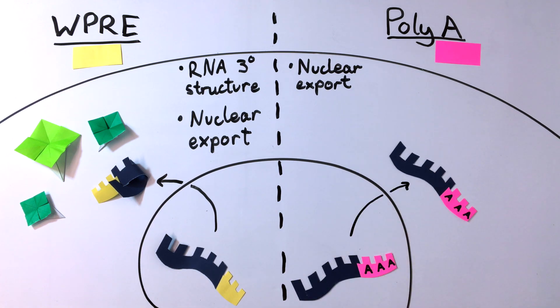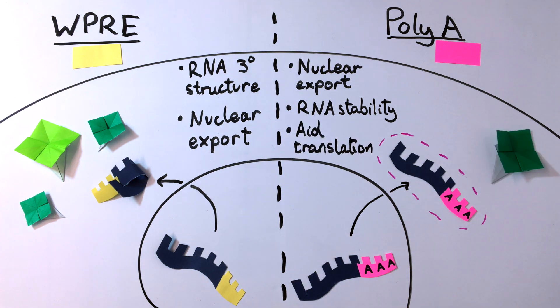Once in the cytoplasm, the polyA tail stabilizes RNA by protecting it from degradation. The polyA tail also aids in RNA translation. Both the polyA and the WPRE sequences help increase the expression of your transgene.